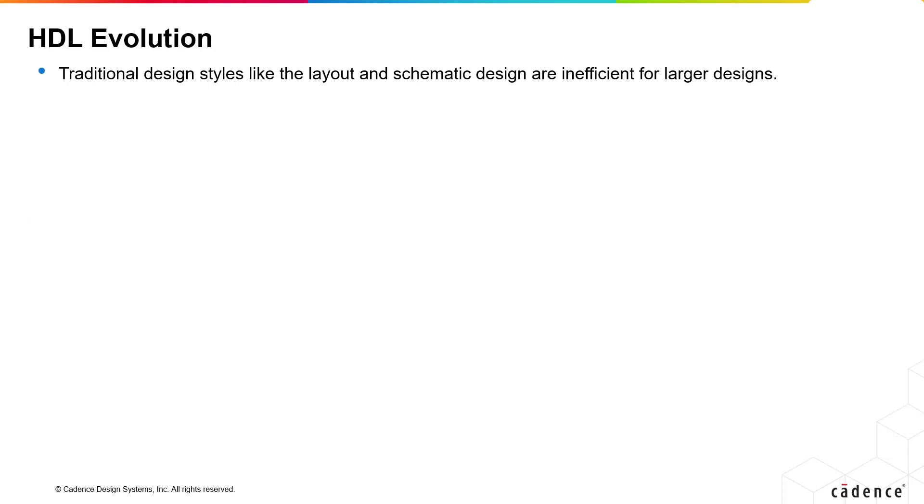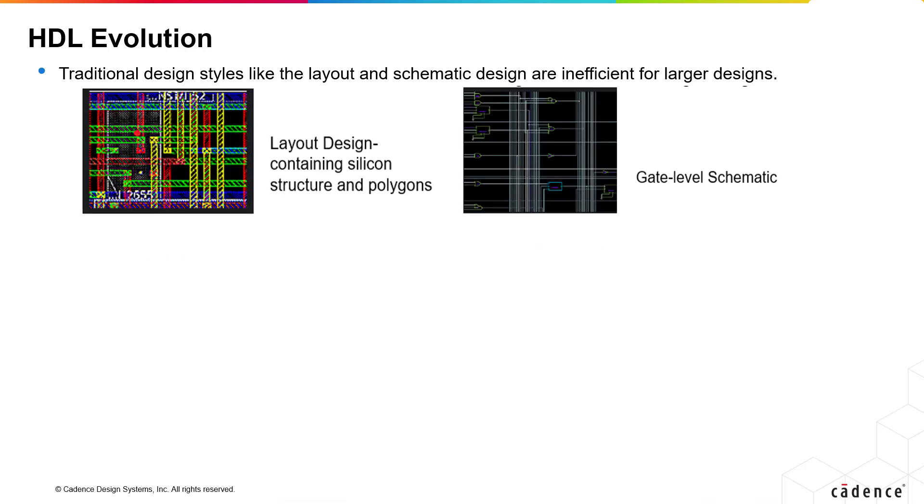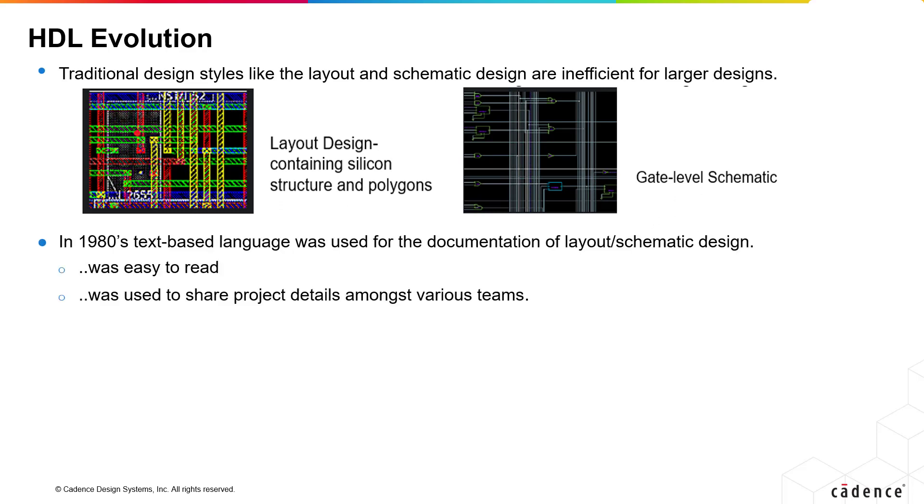Moving on to the history, with the exponential increasing complexity of electronic designs, traditional design styles like layout and schematic has become very tedious and time-consuming. During 1980s, the US Department of Research was using a text-based language for design documentation that was already captured in layout or schematic. This documentation language, which was more text-like, was easy to read and was used to share project details amongst various teams.